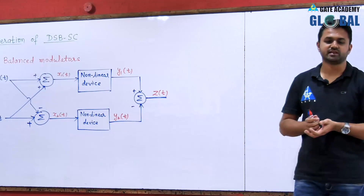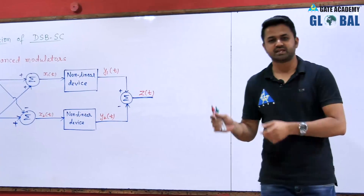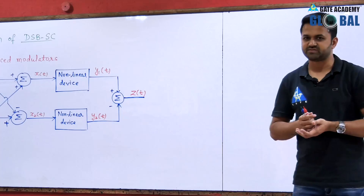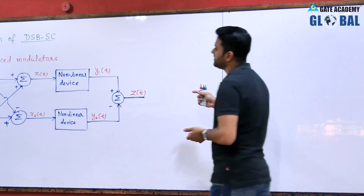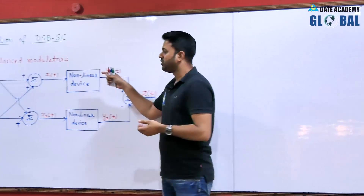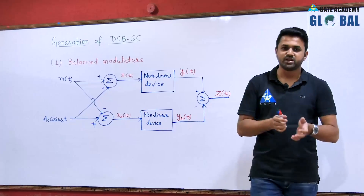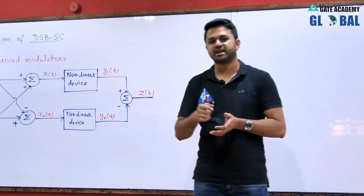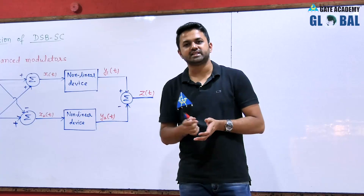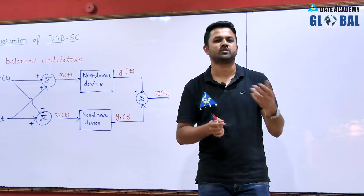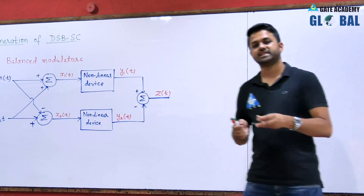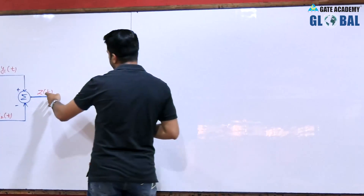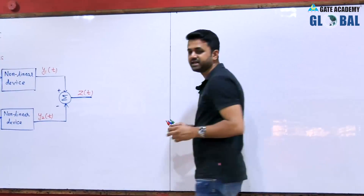The signal z(t) is input to the bandpass filter, because we are talking about the modulator. At the modulator we use a bandpass filter at the transmitter end, and at the receiver we use a low pass filter because we require the low pass message signal. So z(t) is the input to the bandpass filter.